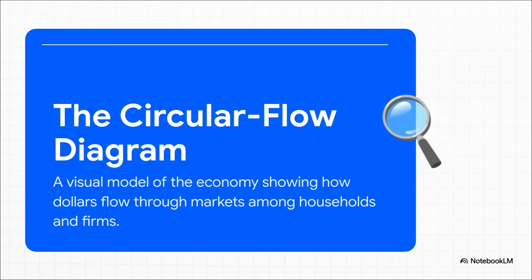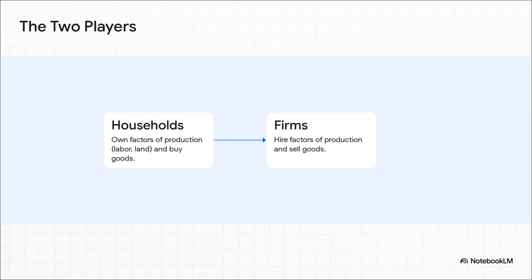First up, we've got the circular flow diagram. You can think of this as the economy's basic blueprint — a super simple visual that shows how money and goods are constantly flowing back and forth between the two main players in any economy. And who are those players? It's pretty straightforward: it's us, we're the households, and the businesses we buy stuff from, the firms. We sell things like our labor to firms, and they pay us income. Then we take that income and spend it on the goods and services that those very same firms produce. It's this continuous circular loop of earning and spending.